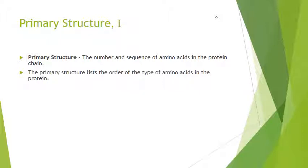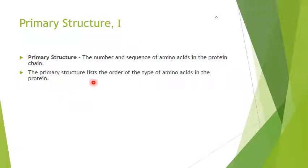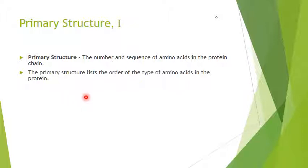A protein is made out of a chain of amino acids numbered from one to the end. Each one will be a specific amino acid — for instance, number one might be serine, number two tryptophan, number three methionine, and so forth. The primary structure of a protein is the order of amino acids: one, two, three, four, five, and so on — for example, serine, proline, threonine, methionine.